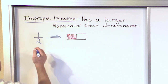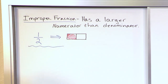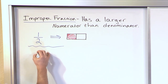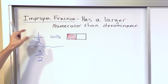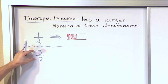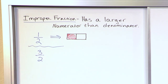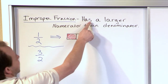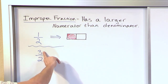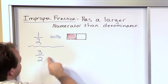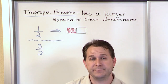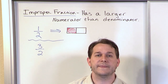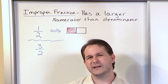Now what if we have a fraction that looks something like this? Three over two — the way you say this is three halves. So here we have one half, meaning one out of two pieces, and here we have three halves. This is what we call an improper fraction because it has a larger numerator — that means the top number — than the denominator, the bottom number. So the top of the fraction is actually bigger than the bottom.